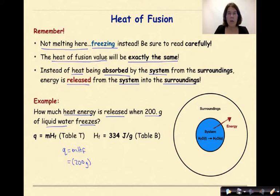Our hf value, which is listed on your reference tables, will be 334 joules per gram. And we know that we've set this up correctly, because grams will cancel grams, and we're left with joules, which is the value that we want. So when we multiply 200 times 334, we get 66,800 joules. And could we put that into scientific notation? Of course we could, or we can just leave it in standard notation.